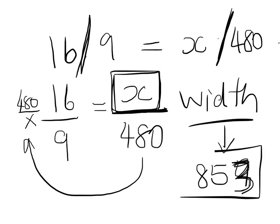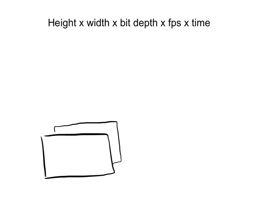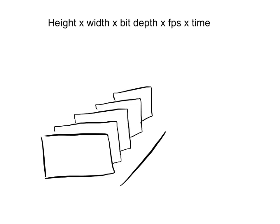So we now have the width, the bit depth, the length of the video, and the height. That's all the information we need to do our formula. Our formula to calculate video file size is: height times width times bit depth times frames per second times time. Basically, we're just taking all the information and multiplying it together. Think of a video as multiple pictures — those pictures are frames — so the number of frames per second is important, and the time tells us how many frames are in the video.